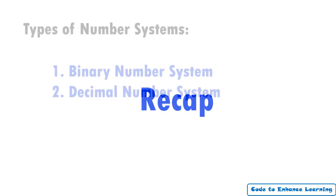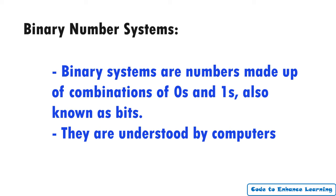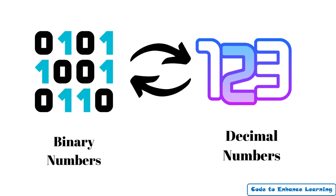Let's have a recap of what we learned today. We have two number systems, binary system and decimal system. Binary systems are numbers made up of combinations of zeros and ones also known as bits. They are understood by computers. Decimal systems are numbers made up of combinations of 0 to 9 also known as decimal numbers. They are understood by humans only. It is possible to convert binary numbers into decimal numbers and vice versa.